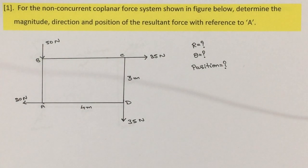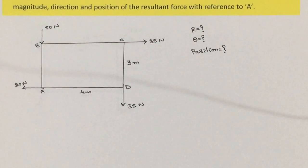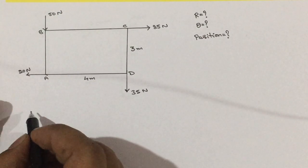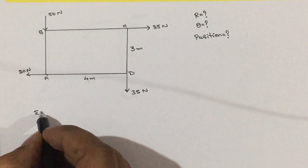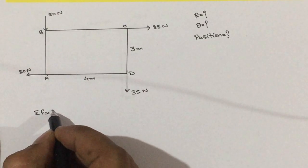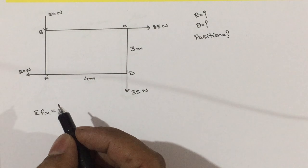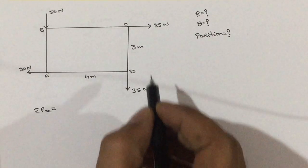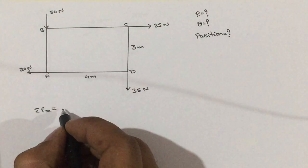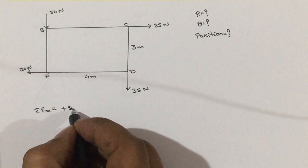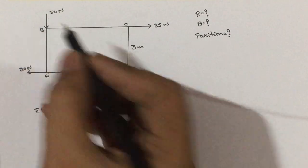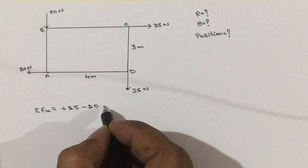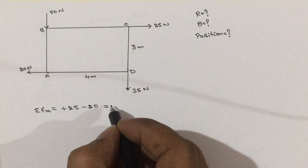Let us calculate sigma Fx and sigma Fy. Sigma Fx is the horizontal force and horizontal component. The first force is vertical — leave it. Next is horizontal and rightward, so plus 25. Then vertical — leave it. The next is horizontal and leftward, so minus 20. So sigma Fx equals 5 Newton.